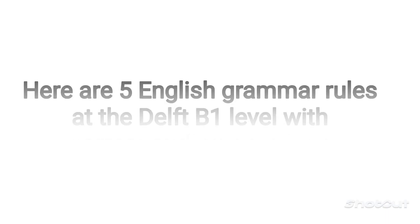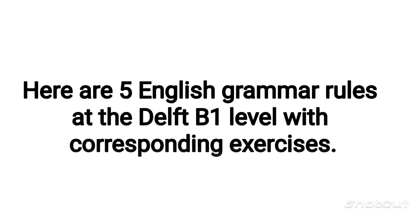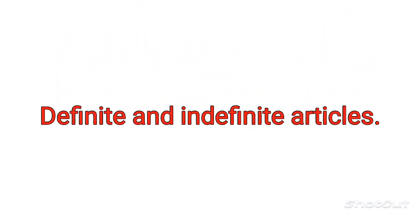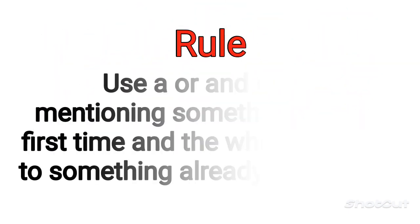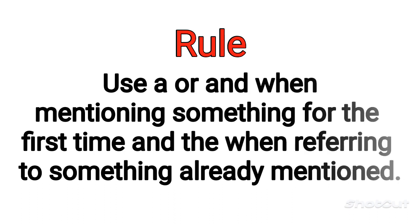Here are 5 English grammar rules at the DELF B1 level with corresponding exercises. Definite and Indefinite Articles Rule: use A or AN when mentioning something for the first time, and THE when referring to something already mentioned.